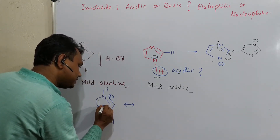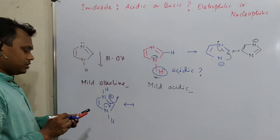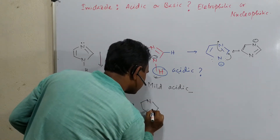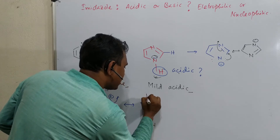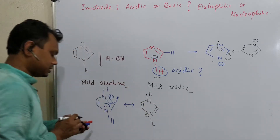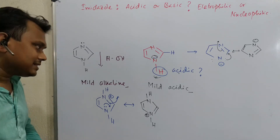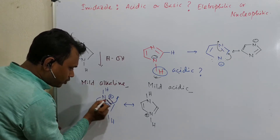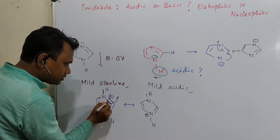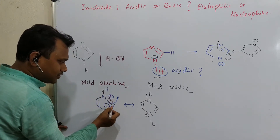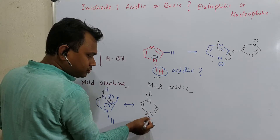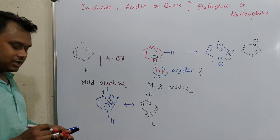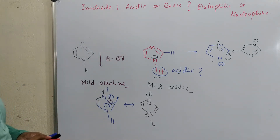There is one lone pair which can delocalize into the ring. This results in equivalent canonical forms. To place the positive charge correctly: nitrogen's normal valency is 3, but where I observe valency of 4, I place the positive charge — nitrogen attached to 4 bonds gets a positive charge. So this is also an equivalent canonical form, and that's why imidazole is also a mild base.